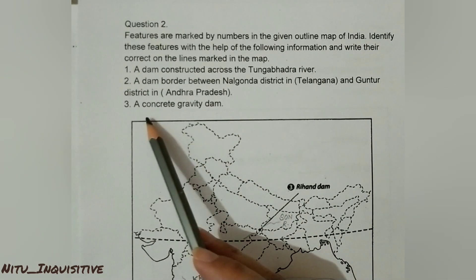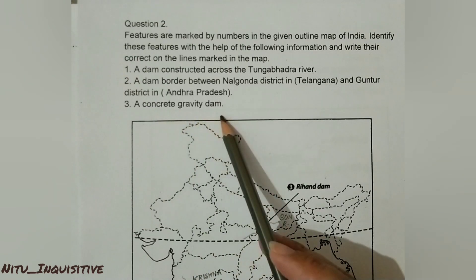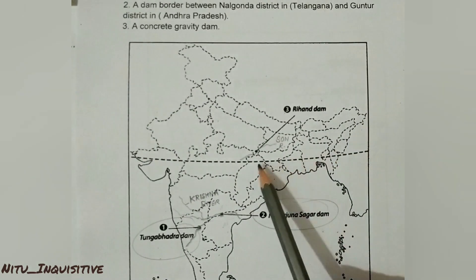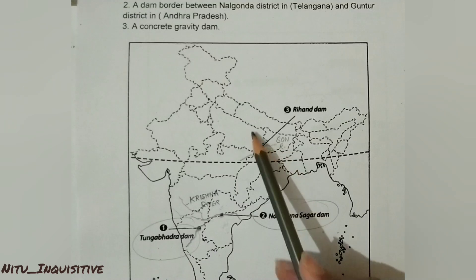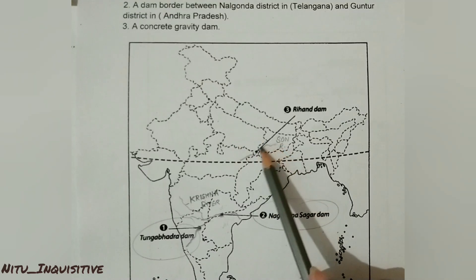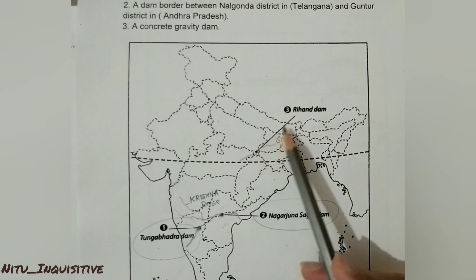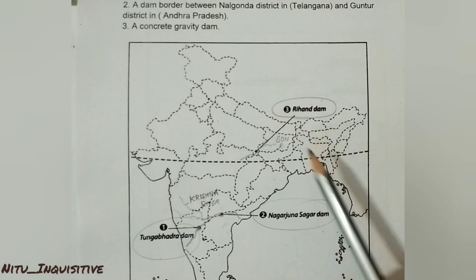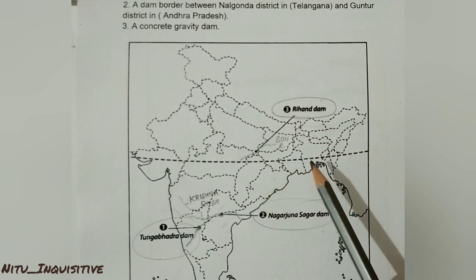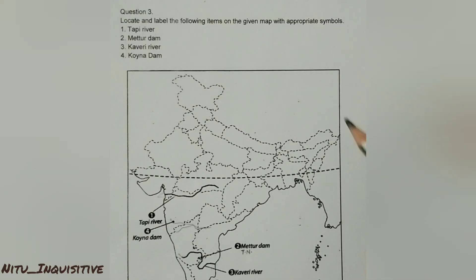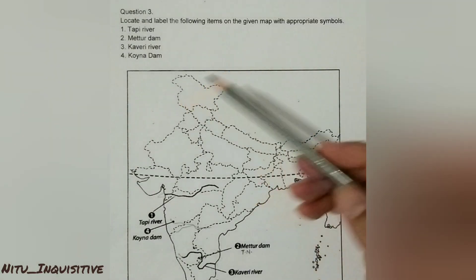The next question is: a concrete gravity dam. Around here we have one tributary of the Ganga River, that is the Son River. On the Son River we have Rihand Dam, which is one of the largest dams in terms of volume.